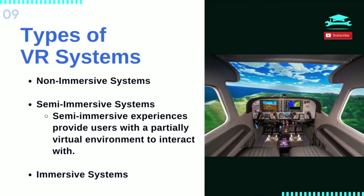Semi-immersive experiences provide users with a partially virtual environment to interact with. This type of VR is mainly used for educational and training purposes, and the experience is made possible with graphical computing and large projector systems. In the picture shown, the instruments in front of the pilot are real and the windows are screens displaying virtual content. It's important to keep in mind that semi-immersive VR simulations still give users the perception of being in a different reality, though physical environments are created to supplement the virtual reality.